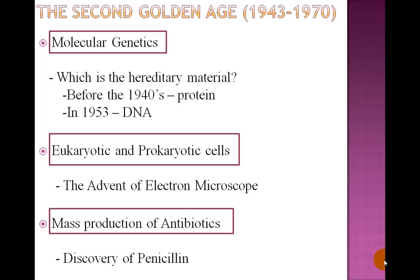The years between 1943 and 1970 constitute the Second Golden Age of Microbiology. The 1940s introduced the field of molecular genetics to general biology. Before the 1940s, biologists used to think that protein was the hereditary material of bacteria. After several scientists studied genes and their functions in the 1940s, by 1953 sufficient evidence existed to state that DNA is the hereditary material of bacteria.